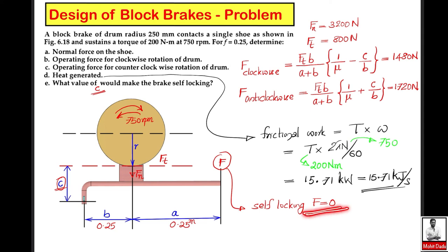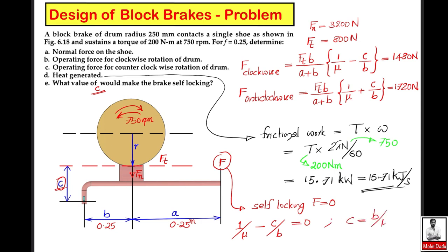For self-locking in the clockwise direction, we need the term (1/μ − c/b) = 0. Solving: c = b/μ = 0.25/0.25 = 1 meter. Initially c was given as 0.075 m (75 mm), but if c becomes 1 meter (1000 mm), the braking action will occur without any externally applied force — this is the self-locking condition.